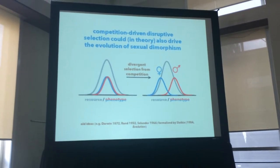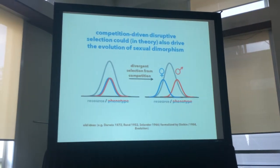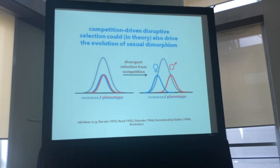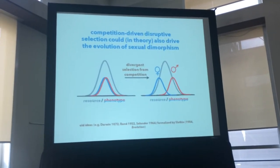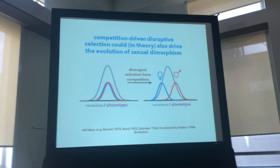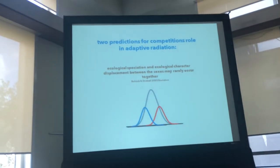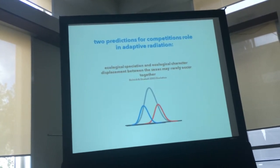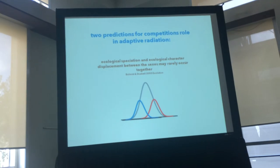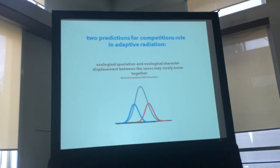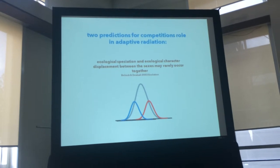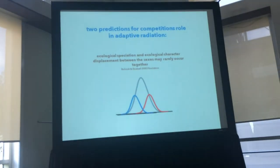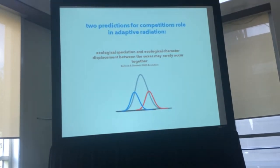This has led to some interesting theory, because the same process of resource competition could potentially lead to alternative outcomes. There are two general predictions we can make for how this should play out in adaptive radiation. A classic idea, formalized a little over ten years ago, is that ecological character displacement between the sexes might stall the progress of adaptive radiation — because divergence between the sexes relaxes the disruptive selection that would otherwise potentially lead to ecological speciation. So we get one or the other.